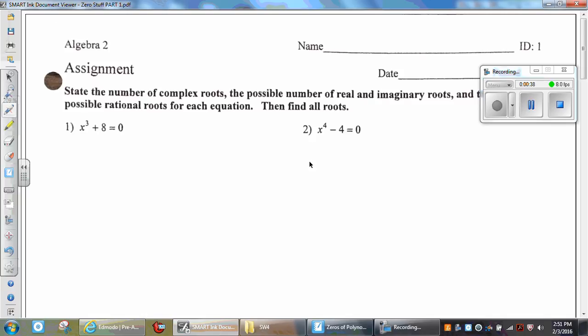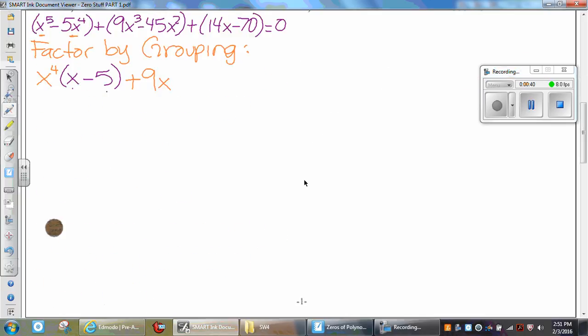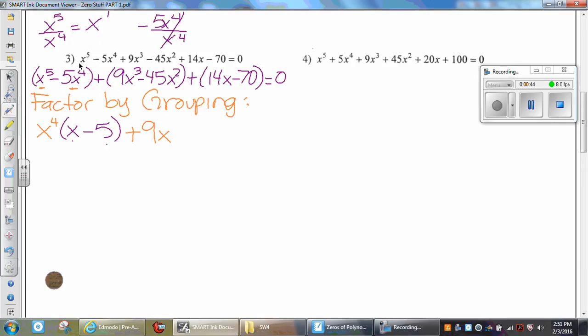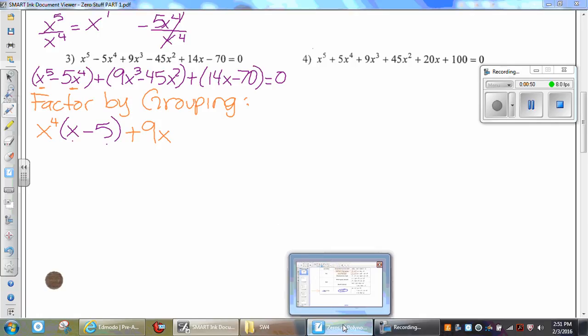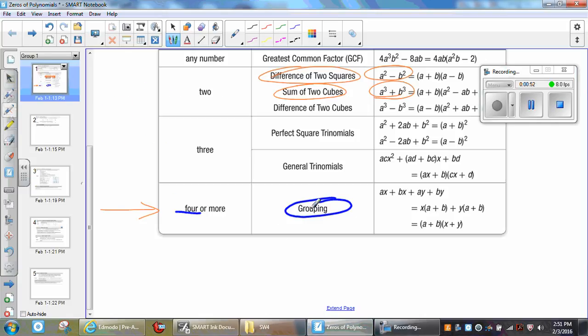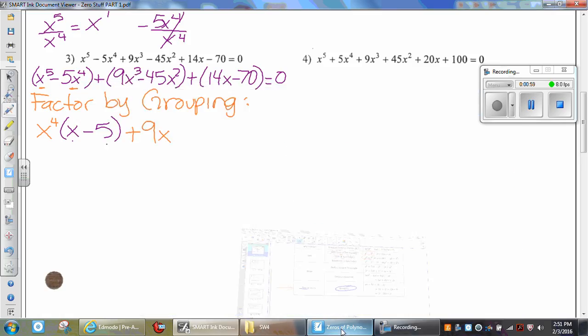Now for this one we're going to factor by grouping. If you count, how many terms do we have here? One, two, three, four, five, six. So right here under our rules it says we could use factoring by grouping if we have four or more terms. Why doesn't zero count as a term? Because it's on the other side and it equals. Correct, yes.